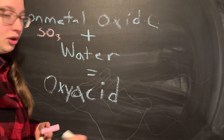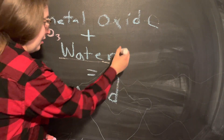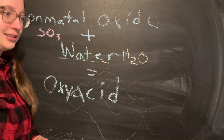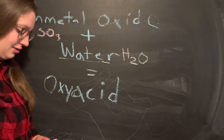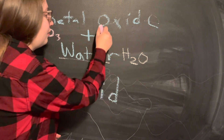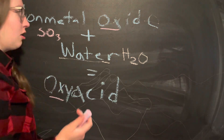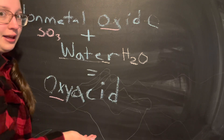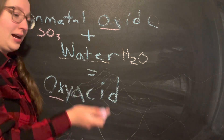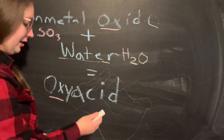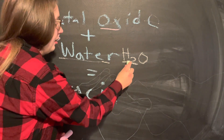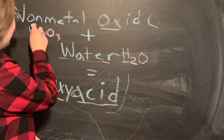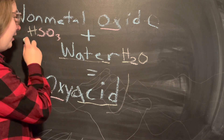And then water — we know what water is, H₂O. And then we're going to make an oxyacid. An oxyacid is our oxygen-containing compound, but as an acid. And what does acid mean? It's with the hydrogen in front. So we're going to take our hydrogen from our water and put it in front, and we're going to make an oxyacid.